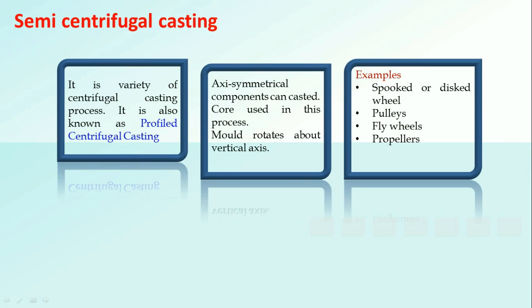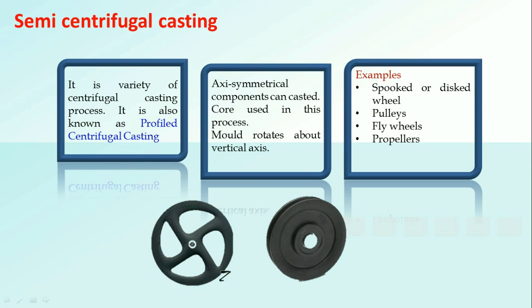A variety of components can be prepared by semi-centrifugal casting. Some examples are spokes or disk-style type of wheels, pulleys, flywheels and propellers.